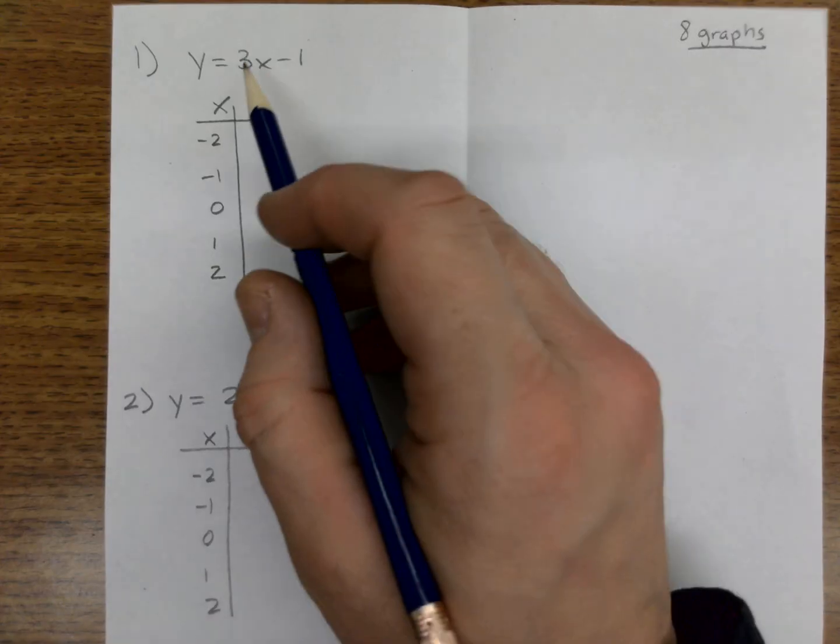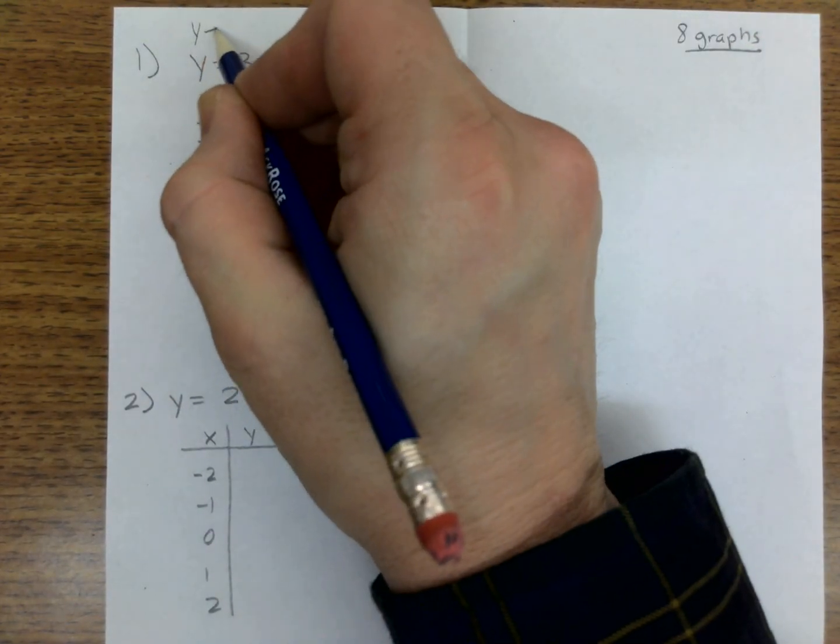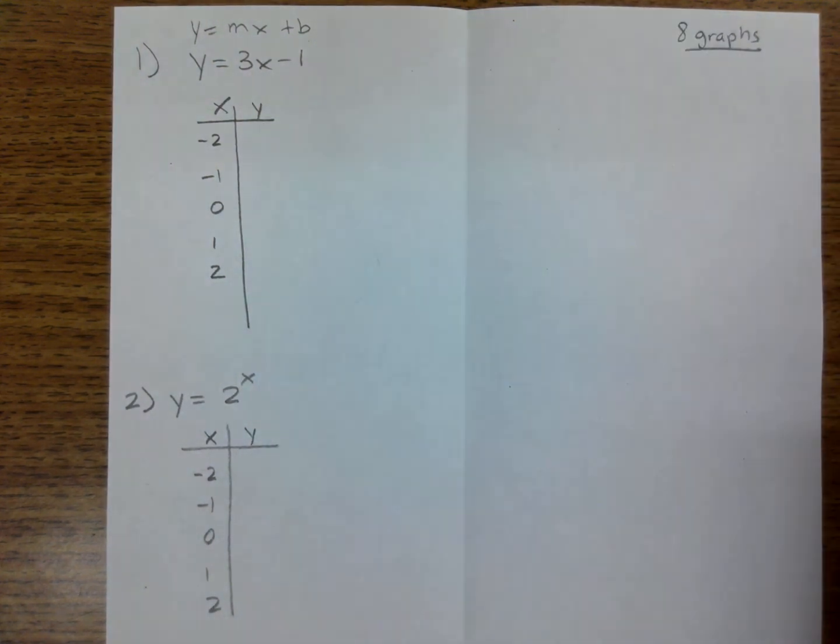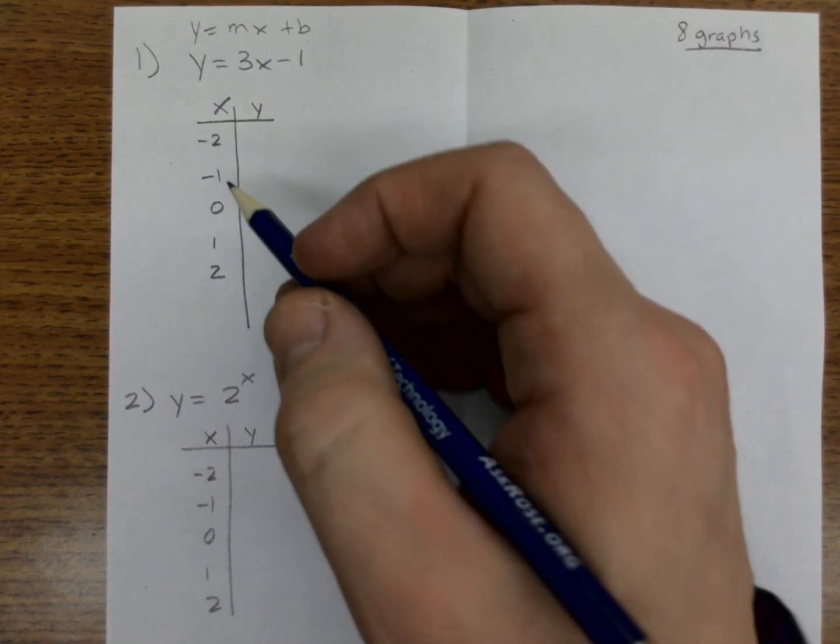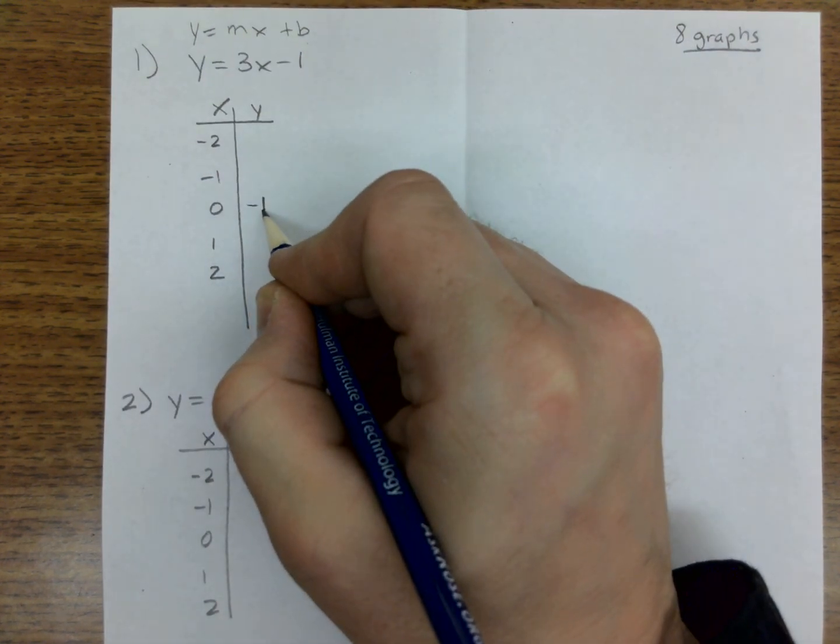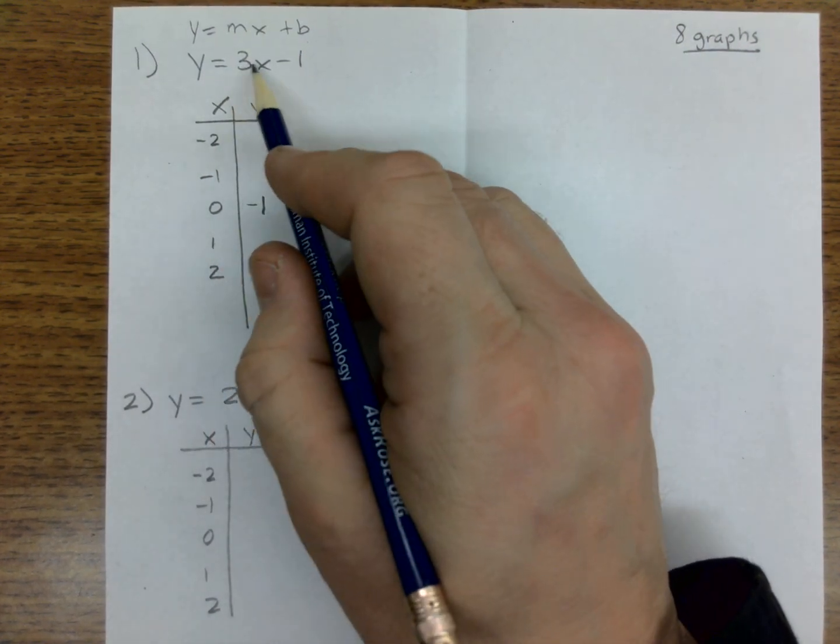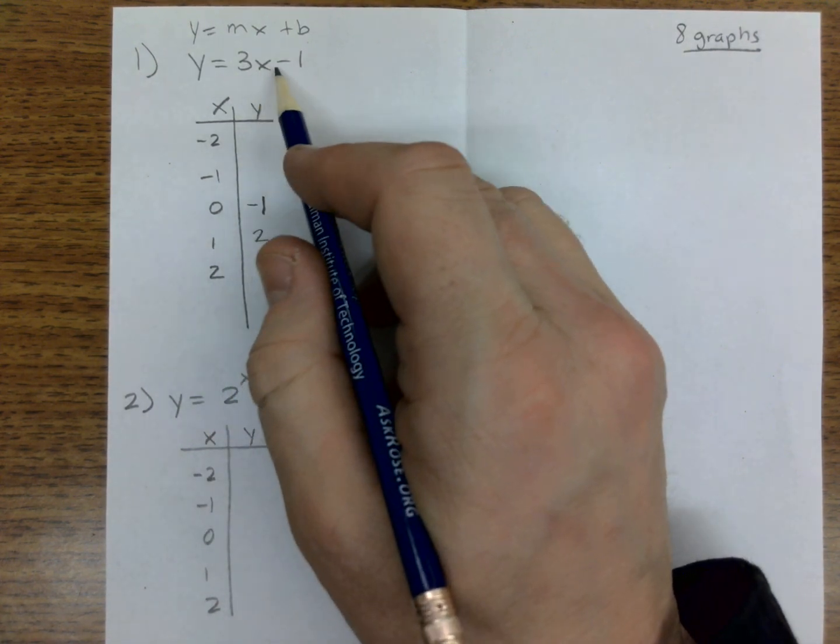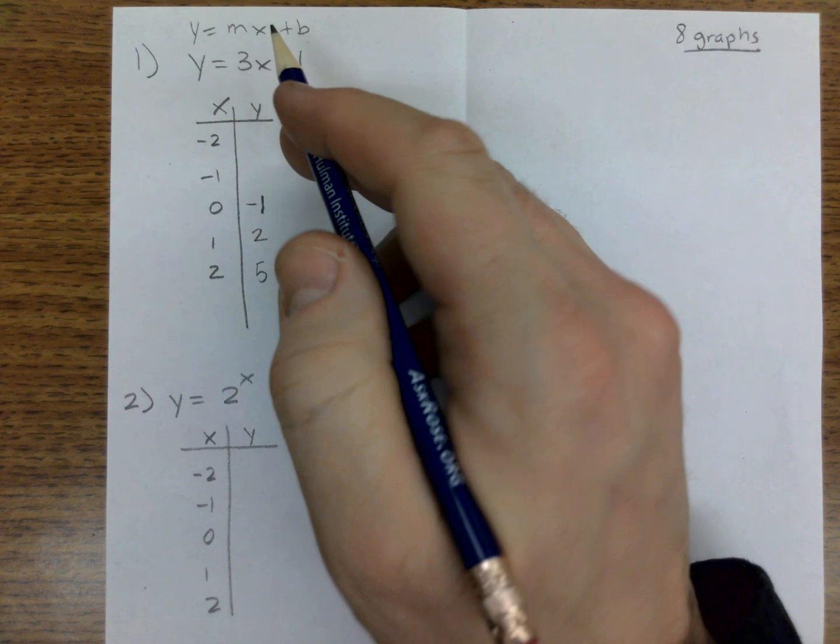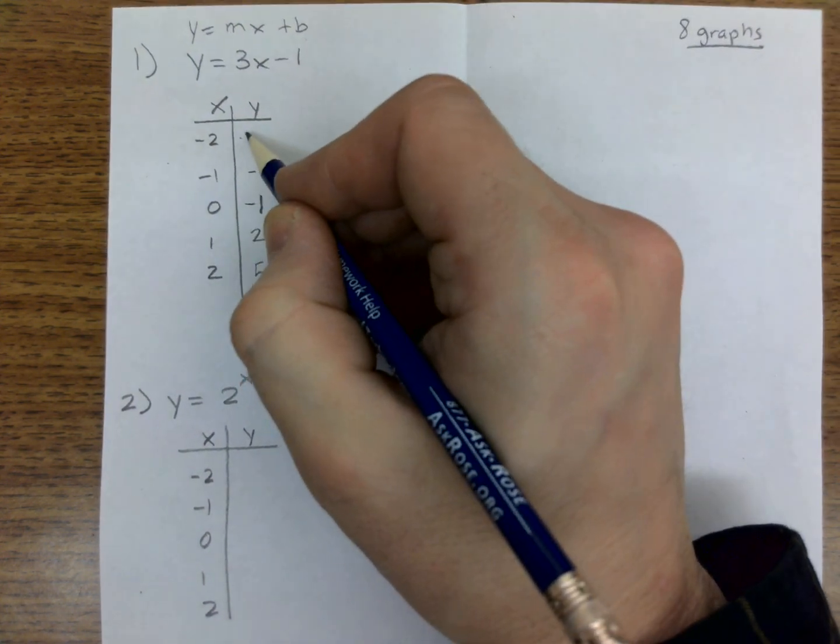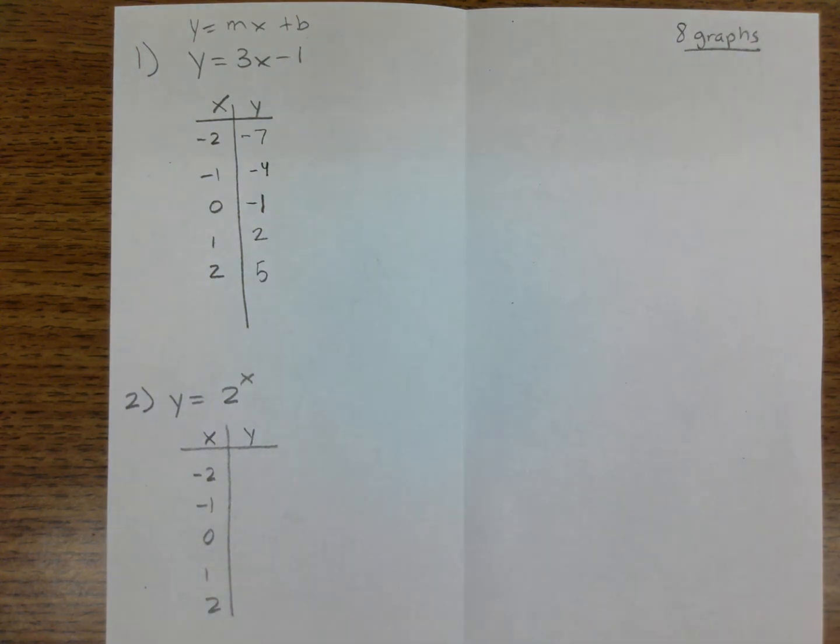All right, first equation, we've seen this before. That's y equals mx plus b, has an intercept and a slope. We started off by graphing a table. If I take these and plug them in, 3 times 0 is 0 minus 1 is negative 1. Plug in a 3, 3 times 1 is 3 minus 1 is 2. Plug in a 2 is 6 minus 1 is 5. And if we go backwards, we plug them in, that's negative 4 and negative 7. So now we have a set of points that we could graph.